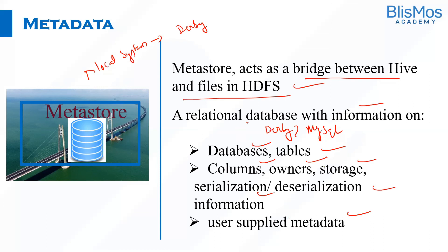Just to summarize, data in Hive can be classified into data and metadata. Data would be stored in HDFS in a file format that defaults to the user Hive warehouse directory, and metadata is stored in any relational database like Derby or MySQL. For example, the metastore would have information about databases, tables, columns, owners, storage, serialization, deserialization information, and also user-supplied metadata.